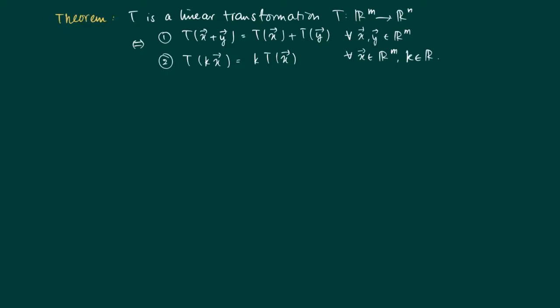The following theorem is an important characterization of a linear transformation. T is a linear transformation from R^m to R^n if and only if we have linearity in x and y, so T(x+y) = T(x) + T(y), and T(kx) = k times T(x).